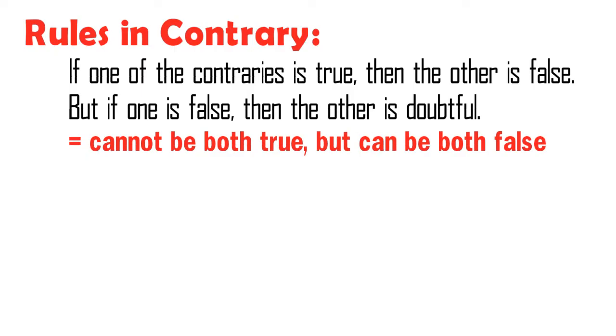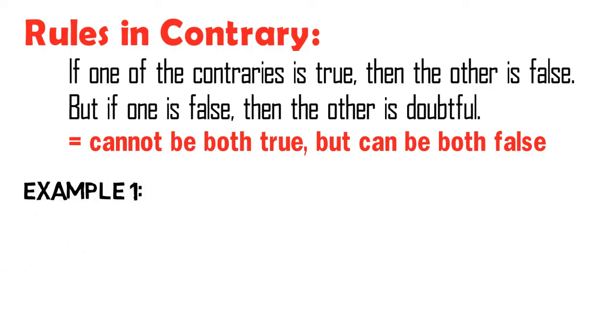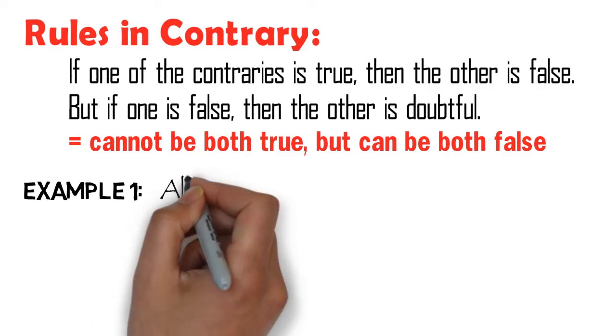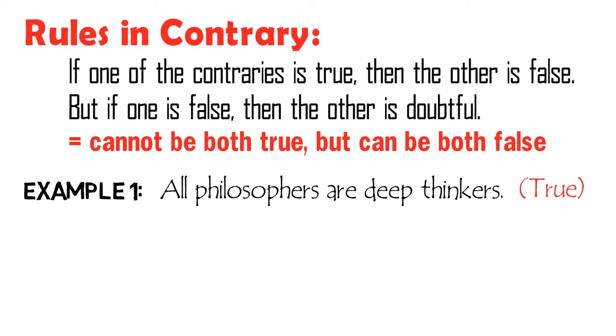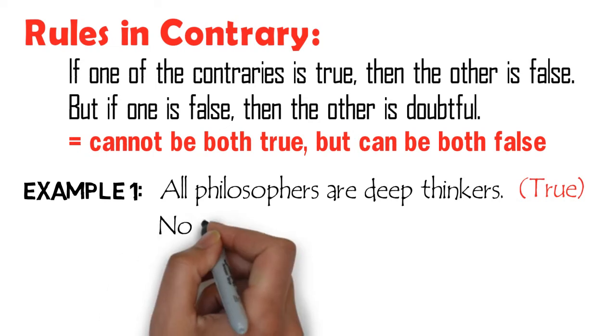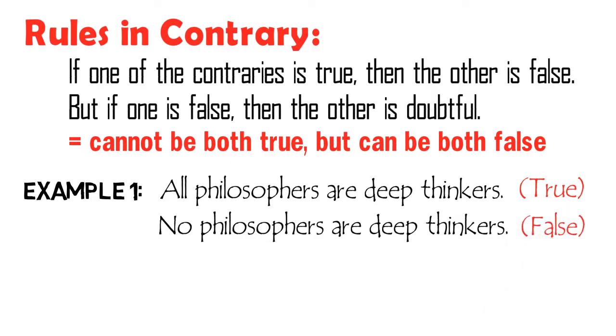Let us consider the examples earlier and assign truth value to them. If we assume that the proposition, all philosophers are deep thinkers, is true, then obviously its contrary, no philosophers are deep thinkers, is absolutely false. Of course, it is already assumed that all philosophers are indeed deep thinkers. Then, it is impossible for philosophers to be not deep thinkers.